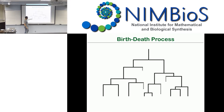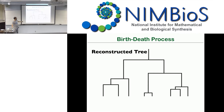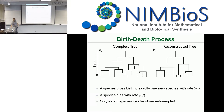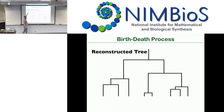In the complete tree we always have extinct lineages. If we don't have a good fossil record and don't use the fossilized birth-death process that Tracy talked about yesterday, we don't observe those lineages. So we just prune them away. What remains is the reconstructed tree, because it's reconstructed from our present-day extant taxa.